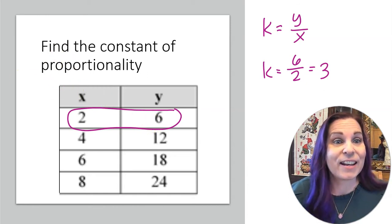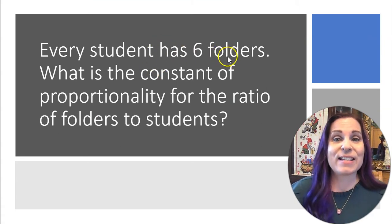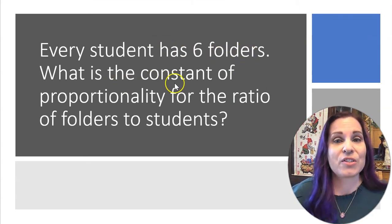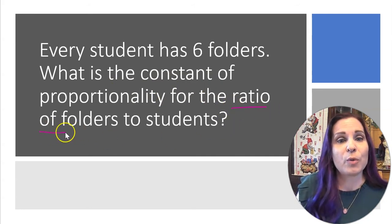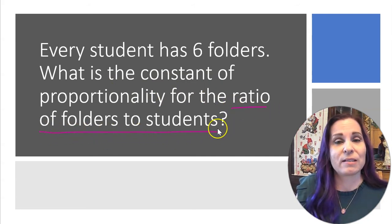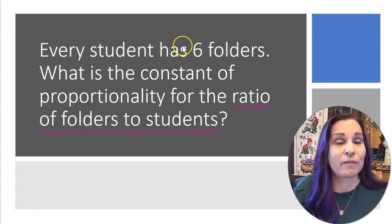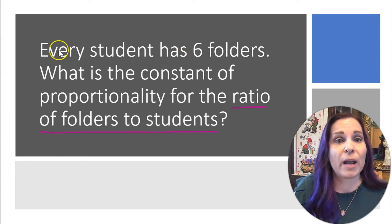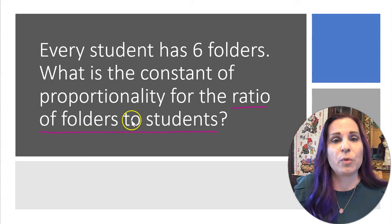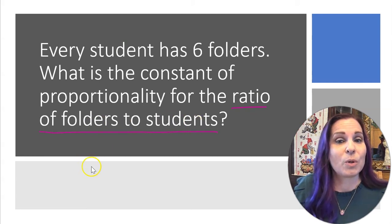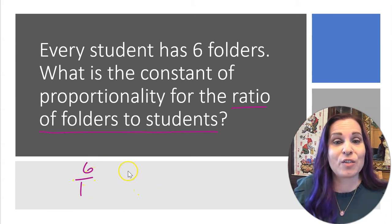Let's try another one. Every student has 6 folders. What's the constant of proportionality for the ratio of folders to students? All right, according to our information here, there are 6 folders for every 1 student. So the ratio of folders to students would be 6 to 1, making my constant of proportionality 6.